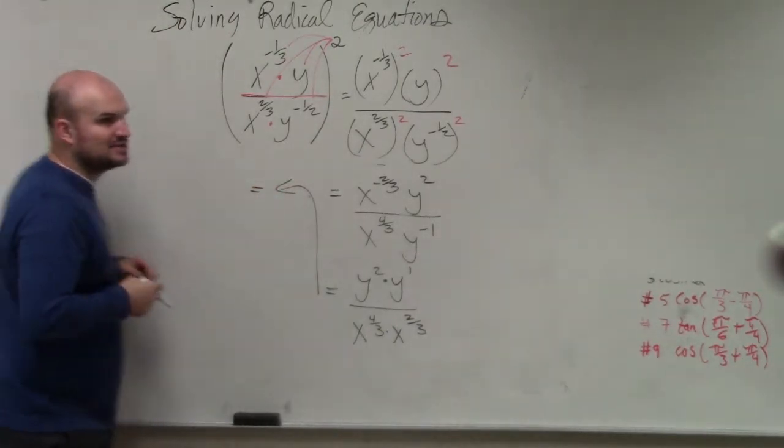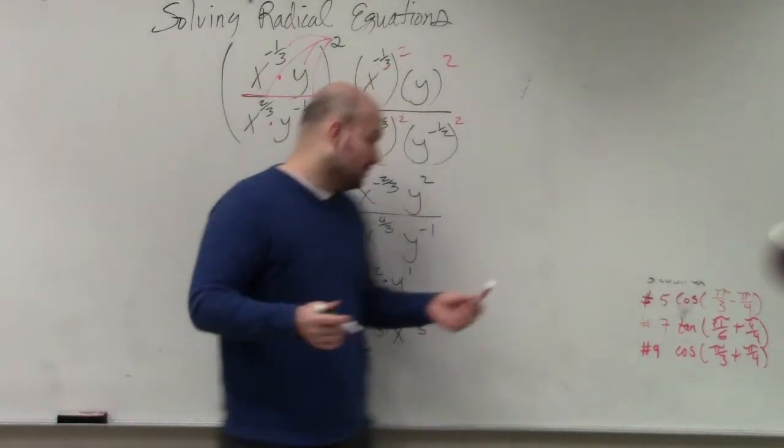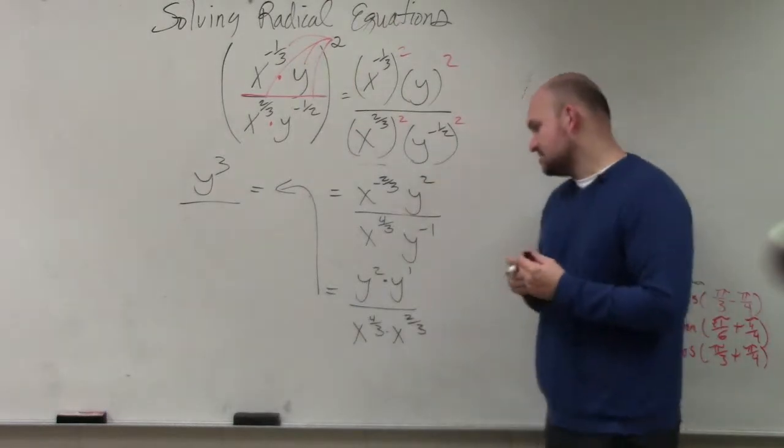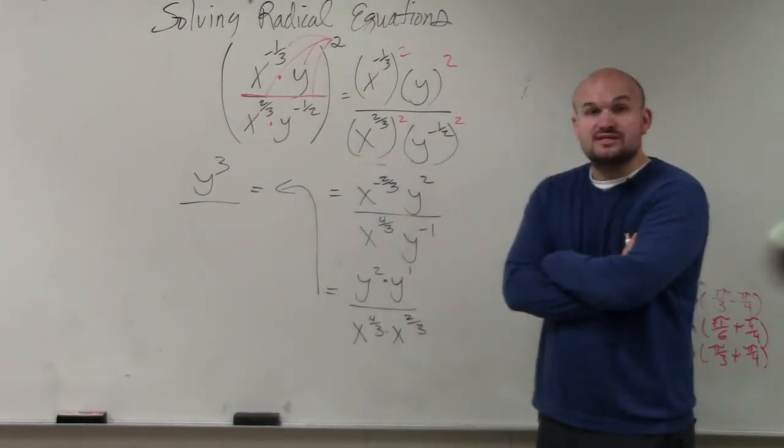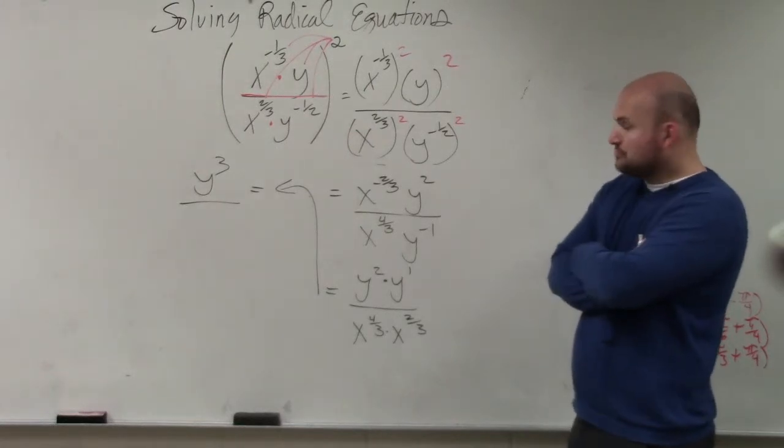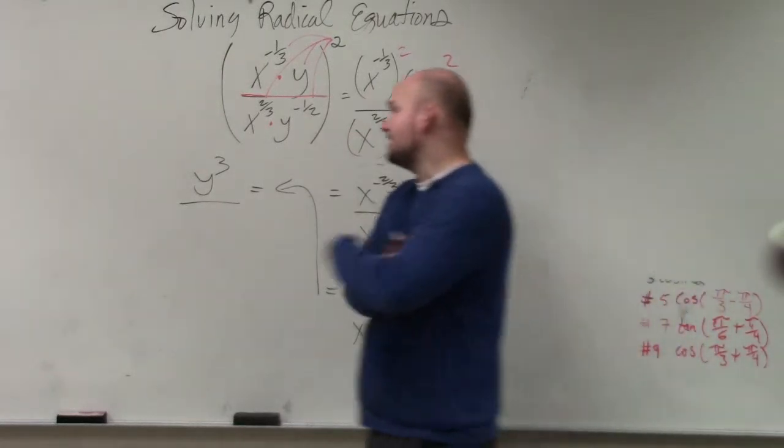What's y squared times y to the 1st? That's just using our power rule, which is y cubed. And then x to the 4 thirds times x to the 2 thirds. Since they have the same denominator, using the power rule we add the powers, which would be 6 thirds. 6 divided by 3 is 2.